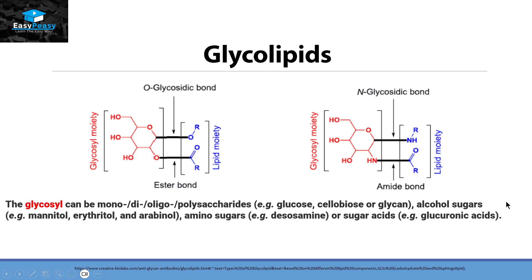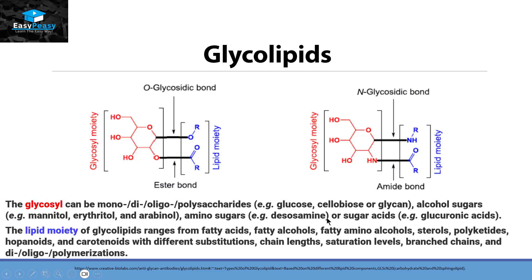Whereas the lipid moiety can be fatty alcohols, fatty amino alcohols, sterols, polyketides, terpenoids, and carotenoids with different substitutions, chain lengths, saturation levels, branched chains, and polymerization.